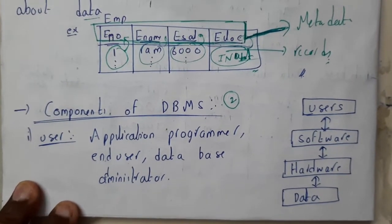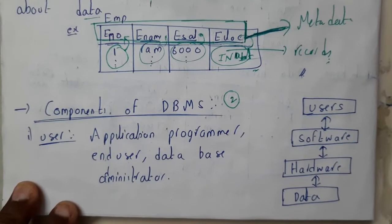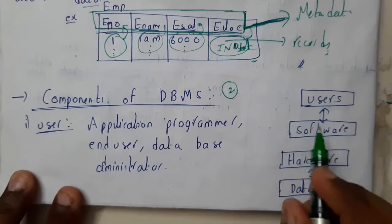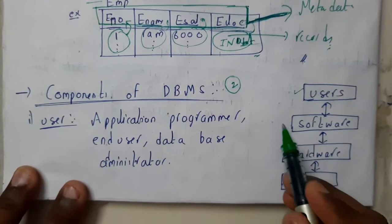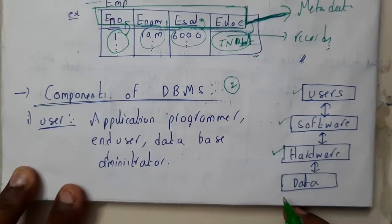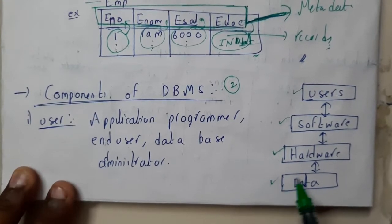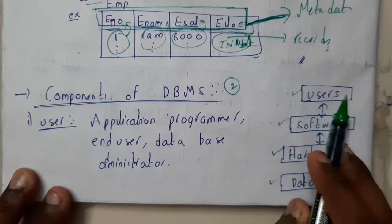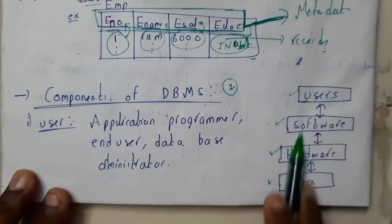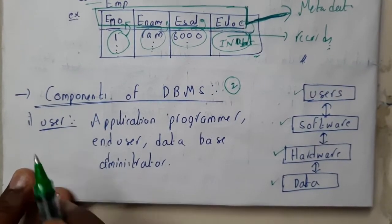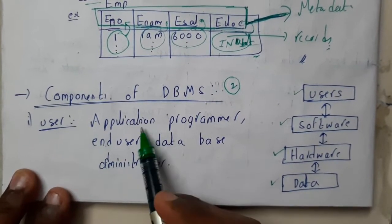So now let us go through the components. This is the basic diagram — in future we'll be going through the architecture as well. Basically we will have a user, and the user will be connected to the software, and the software will be interacting with the hardware, and the hardware consists of data. This process is cyclic.